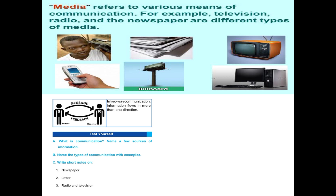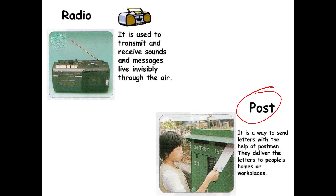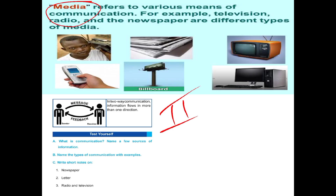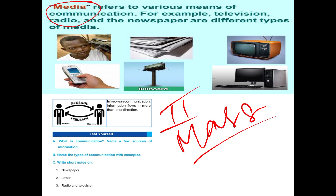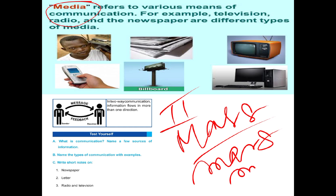Next we have media. All the things we discussed — radio, postal services, telephone services, fax machine — were actually personal communication. Media is an example of mass communication. Mass communication means you are communicating with a large number of people, exchanging information with many people at the same time. This type of communication is known as mass communication.